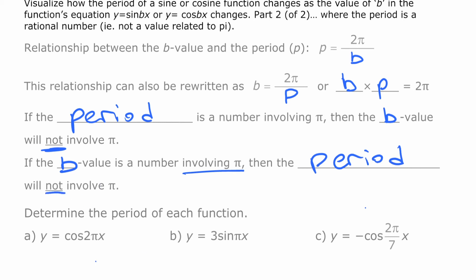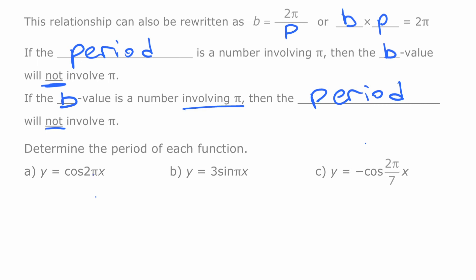So if we're looking for the period for some functions here, if you recognize that these each have a π involved here, none of the periods are going to involve π. So we can use the relationship that the period is 2π divided by the b-value. So 2π divided by 2π, that first one, the period is 1. If we have just a π there, period is 2π over π, the period is 2 because those π's cancel.